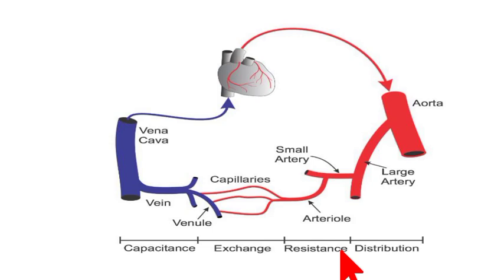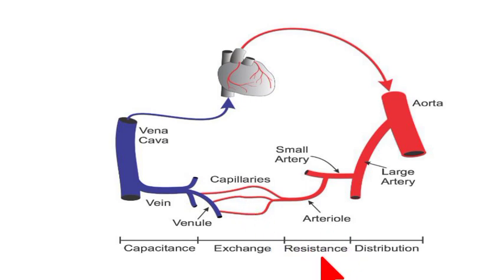Muscle fibers in arterioles are present in large proportion. They are also innervated, meaning nerve cells are also present in their walls. They provide resistance, and blood flow slows down in arterioles so that maximum gaseous exchange and nutrient exchange can occur in capillaries.